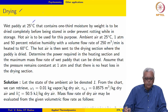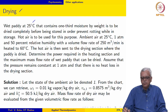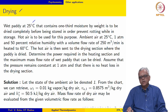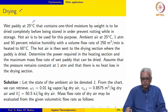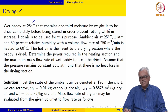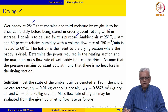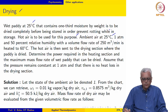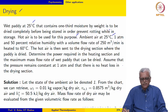The next example involves drying, classified as another application of psychrometric principles. Wet paddy at 25 degrees Celsius contains one-third moisture by weight — one kilogram of wet paddy contains one-third kg water and two-thirds kg dry paddy. This has to be dried completely before being stored to prevent rotting. Hot air is used for this purpose: ambient air at 25 degrees Celsius, 1 atmosphere, 50 percent relative humidity, with a volume flow rate of 250 cubic meters per minute, is heated to 60 degrees Celsius.